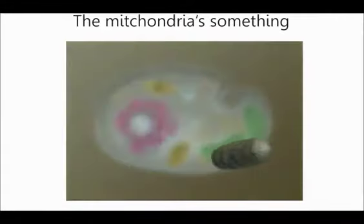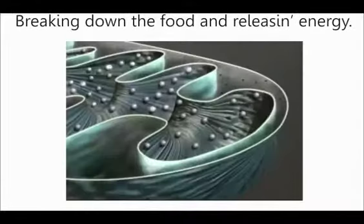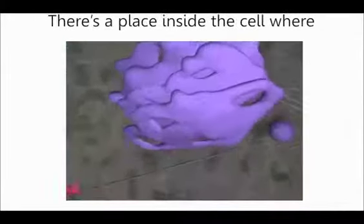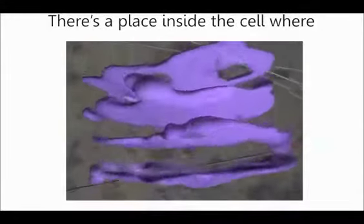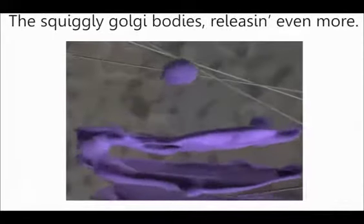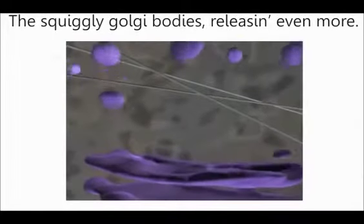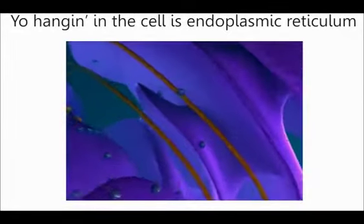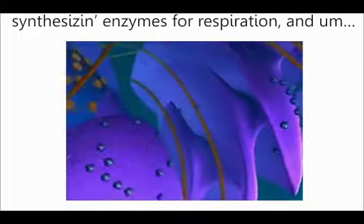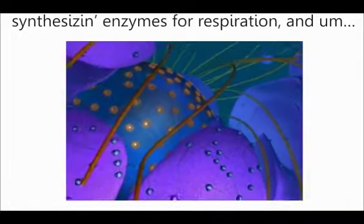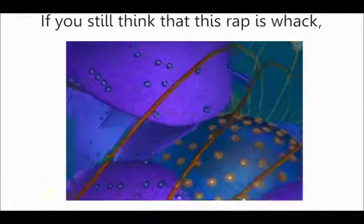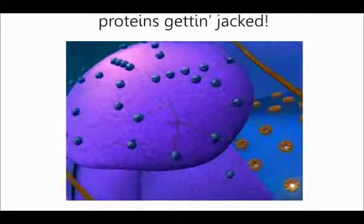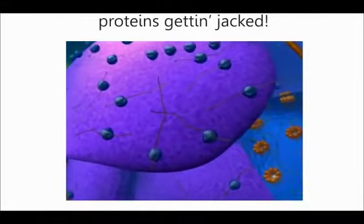The mitochondria is something every cell needs — breaking down the fuel and releasing energy. There's a place inside the cell where chemicals are stored. The squiggly, googly bodies releasing even more. Your hanging in the cell is endoplasmic reticulum, synthesizing enzymes for respiration. And if you still think that this rap is wack, remember ribosomes making proteins getting jacked.